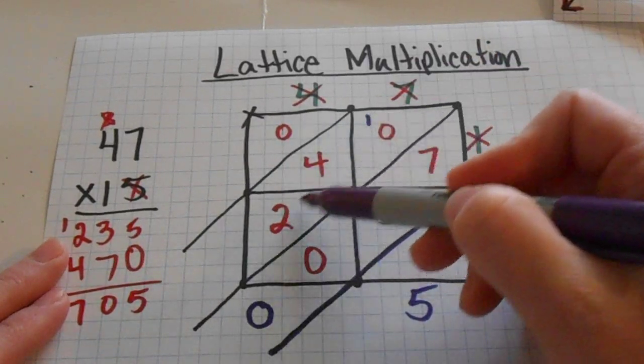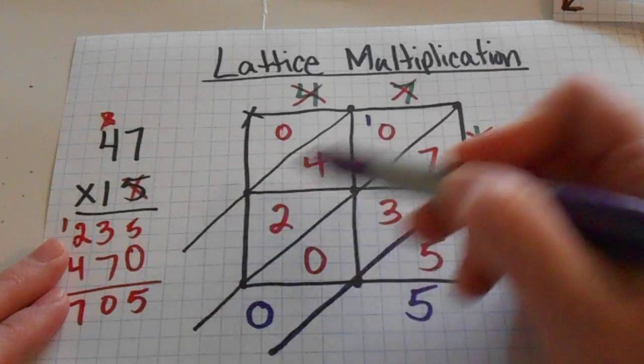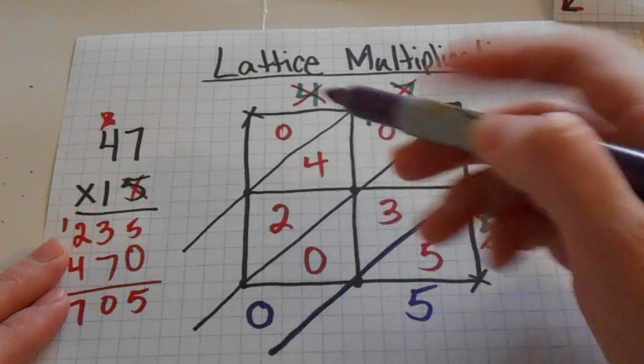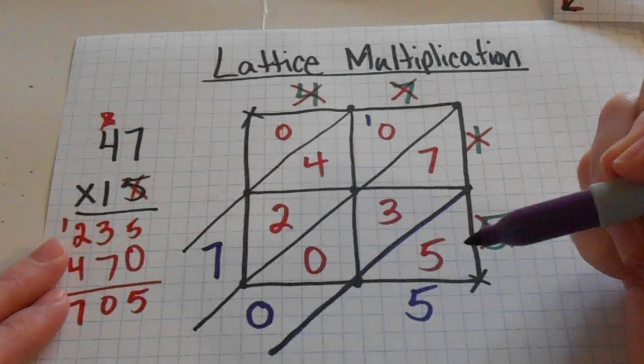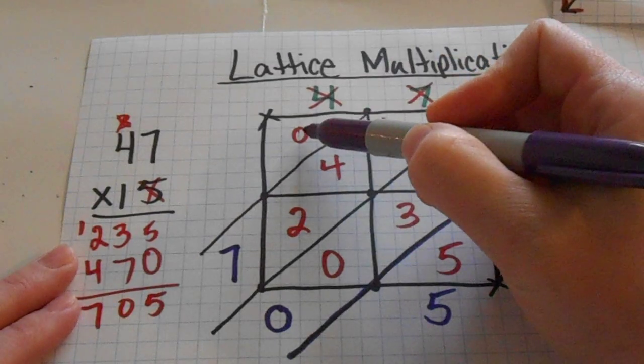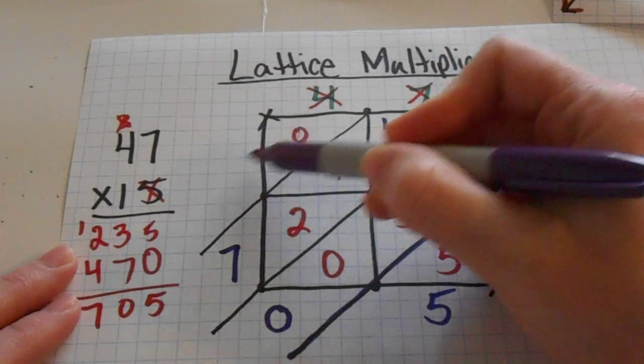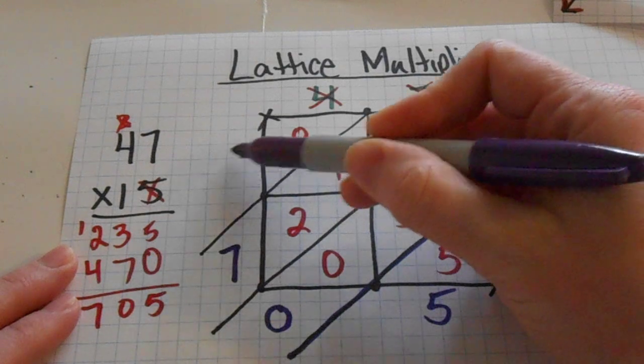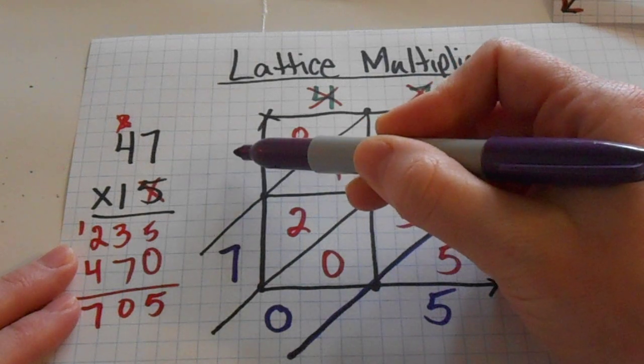Now I've got all of these numbers to add up down this slide. 1 plus 0 plus 4 plus 2 is 7. And then here, since I have a 0 in the thousands place, I don't have to write it. You can write it there if you want to. But I already have my product, my answer.